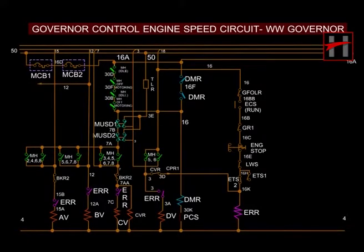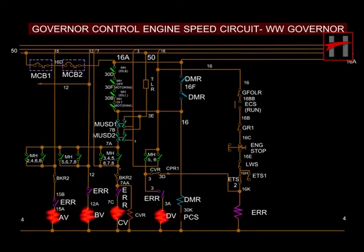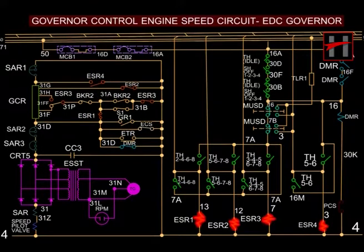This is the governor control engine speed circuit, or the throttle DMR circuit, for locomotives fitted with a Woodward governor. This circuit has speed solenoids AV, BV, CV, and DV fitted inside the Woodward governor, in place of the engine speed relays ESR 1, ESR 2, ESR 3, and ESR 4.